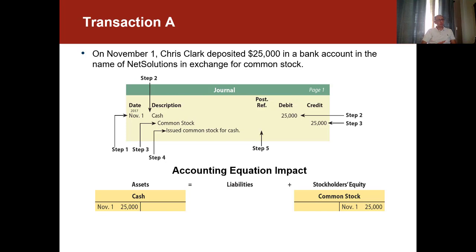Let's see the first transaction, transaction A. On November 1st, Chris Clark deposited $25,000 in the bank account in the name of NetSolutions in exchange for common stock. Chris Clark, who is the owner of this new business, decided to deposit $25,000 into his new business. So there are two accounts affected: cash and common stock. Cash is increasing from the company's perspective — a new amount of cash is being invested, so cash is going up. Common stock, which is an equity account, is also increasing. When assets increase, they get recorded on the debit side, so cash is recorded on the debit side, and common stock is recorded on the credit side.